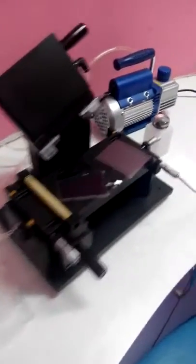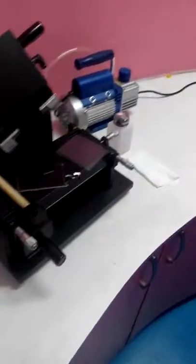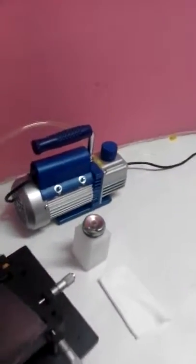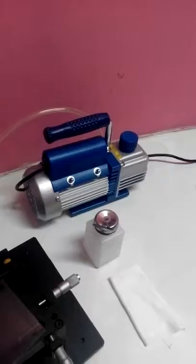You can see there is a mold on the machine and we need to connect the vacuum pump. The pump comes with a canvas which is one liter.